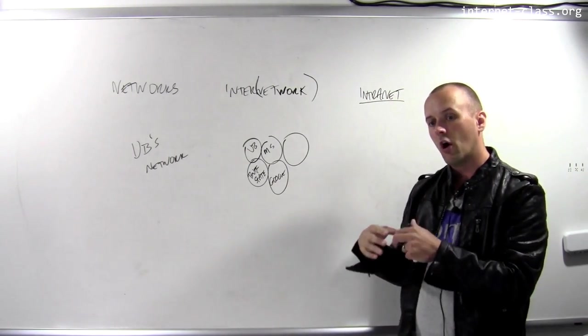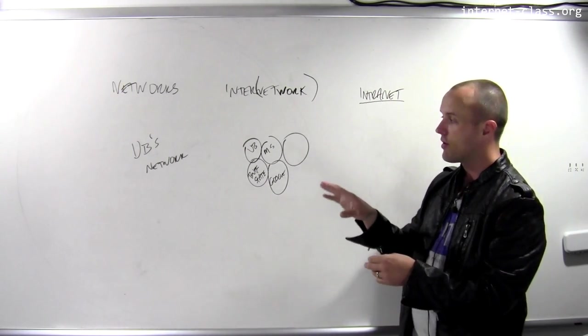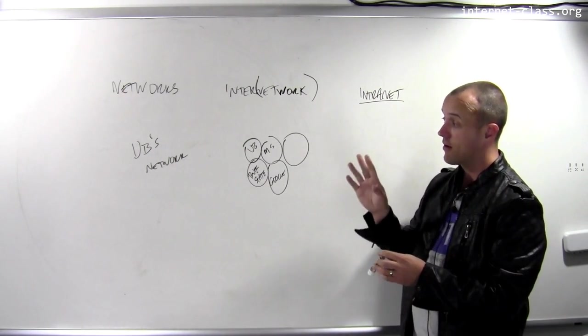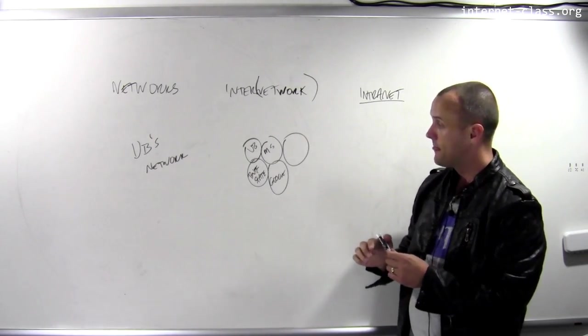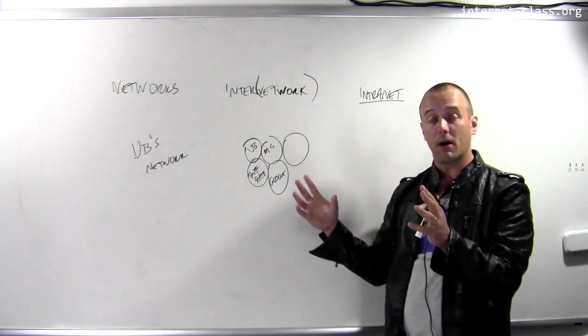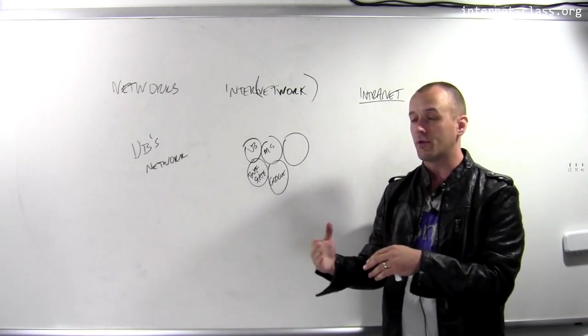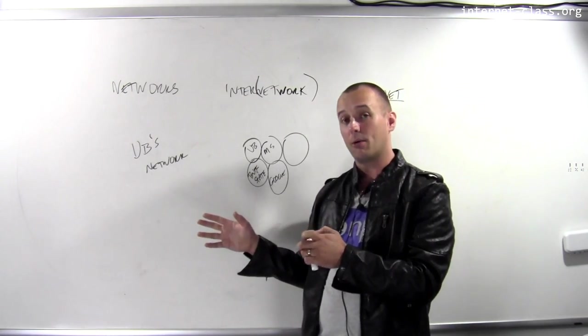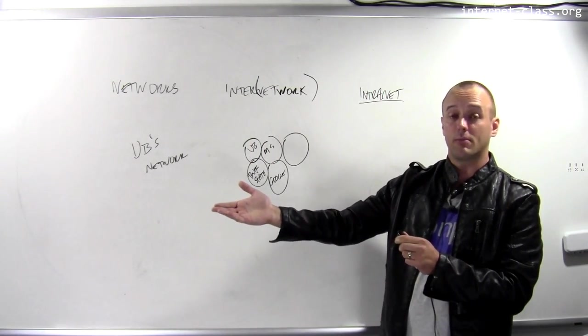they don't necessarily expose all of the information or resources that are present within their own private computer network. UB might say, for example, I agree to be part of the broader internet because it's useful for computers connected to my network to exchange data with all the other computers on the internet.